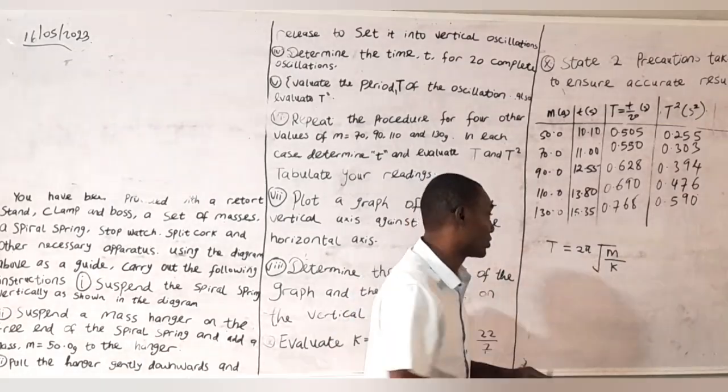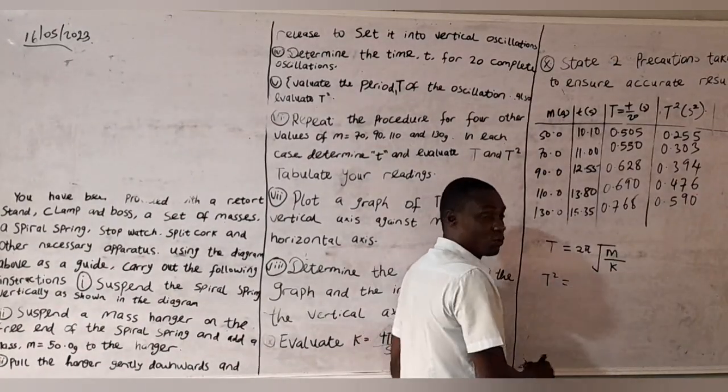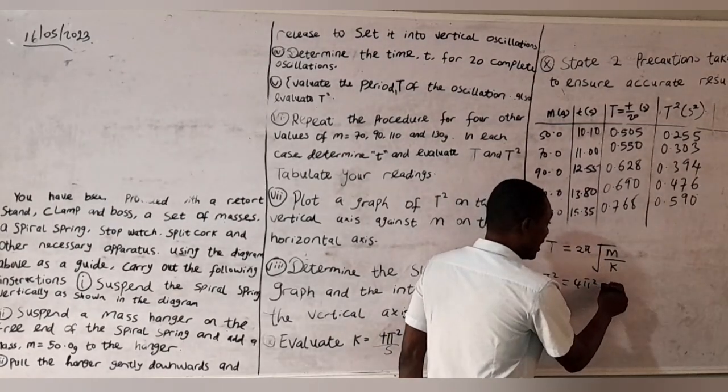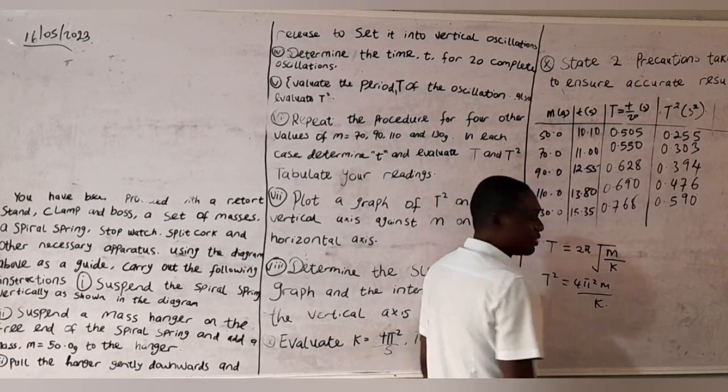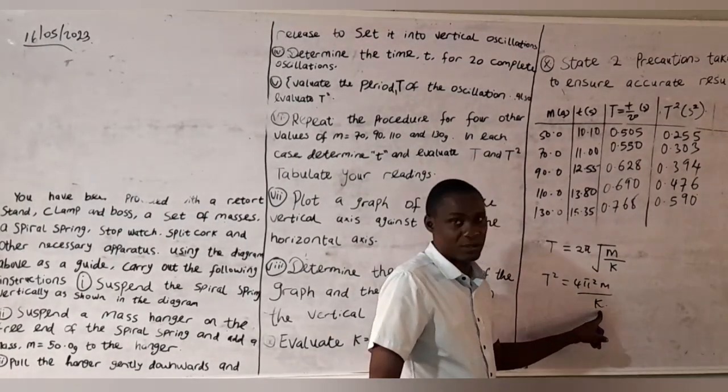So what I want to do is square both sides. When I square both sides, this becomes T squared equals 4π² times m all over k. Now, what do I want to do? I want to find a value for k.